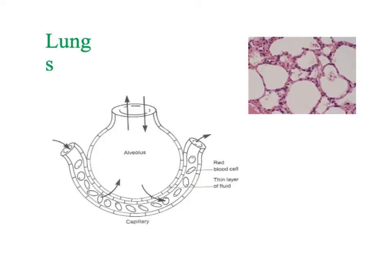If the question is asking what are the structural features of the alveoli themselves, the only things you can mention are the folded alveoli wall and the one-cell-thick walls - the short diffusion pathway of the alveoli walls. The fact that you've got ventilation and blood flow are not structural adaptations of the alveoli; they would be adaptations of the lungs as a whole.